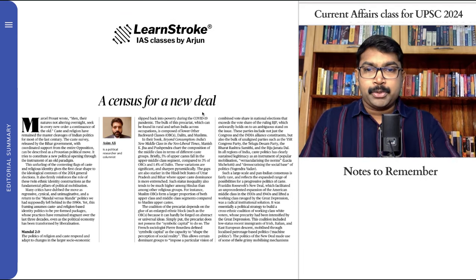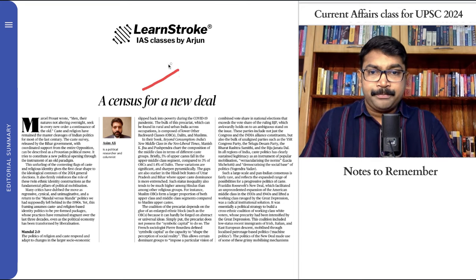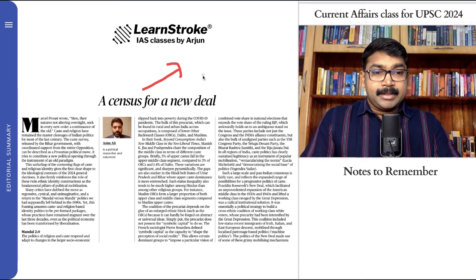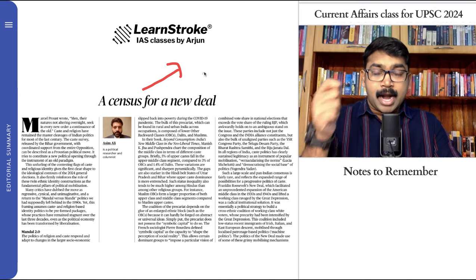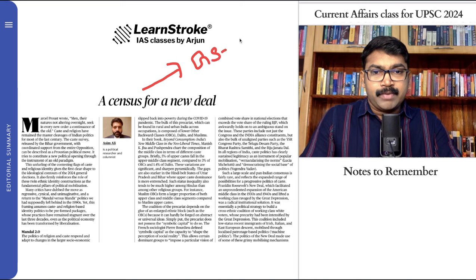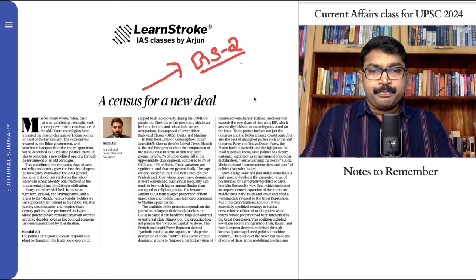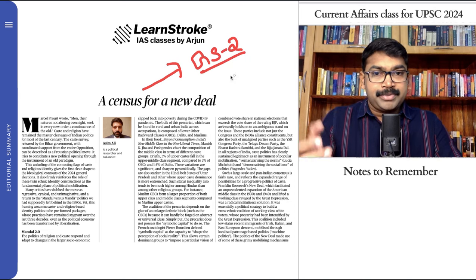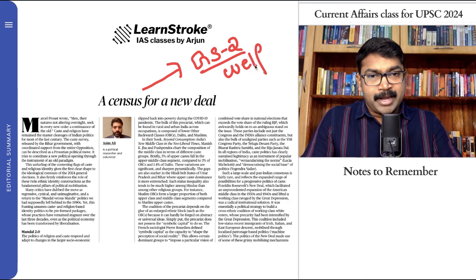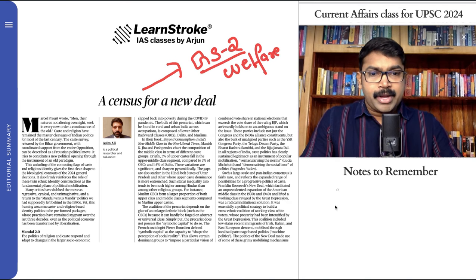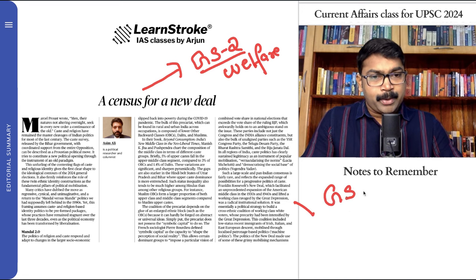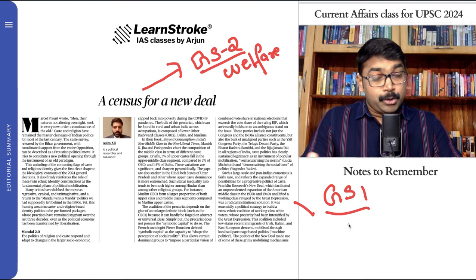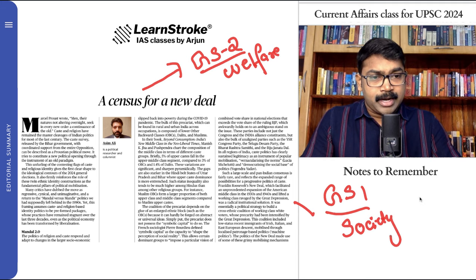The second important editorial deals with 'A Census for a New Deal.' This is useful for GS Paper 2 — government approach in uplifting — because it talks about the concept of welfare. You can also mark it from the GS Paper 1 society perspective, because it basically talks about various aspects relating to caste.